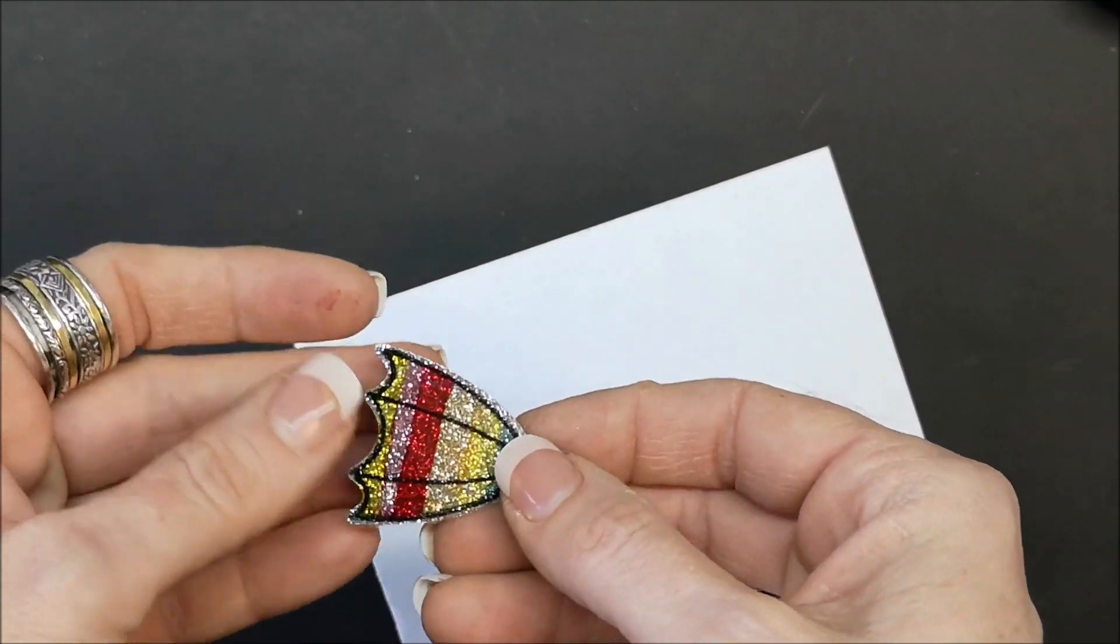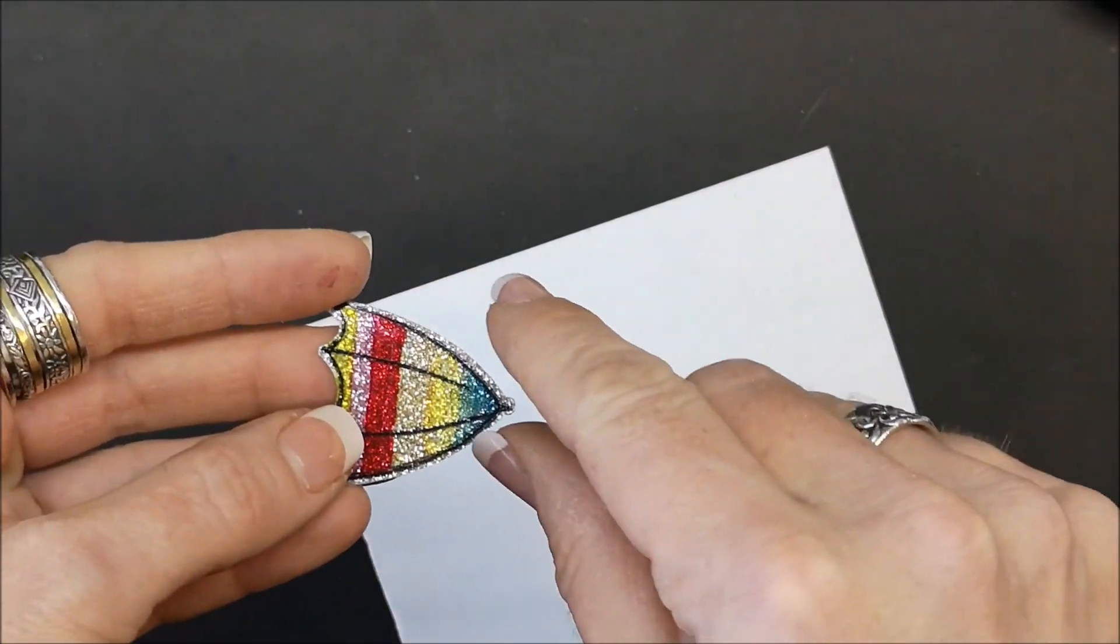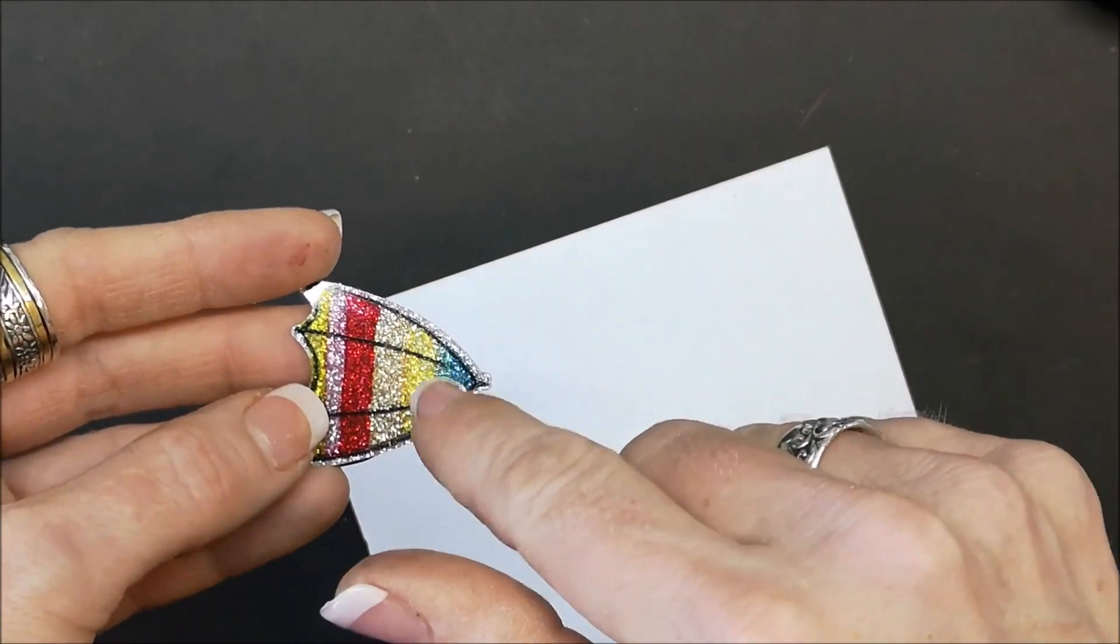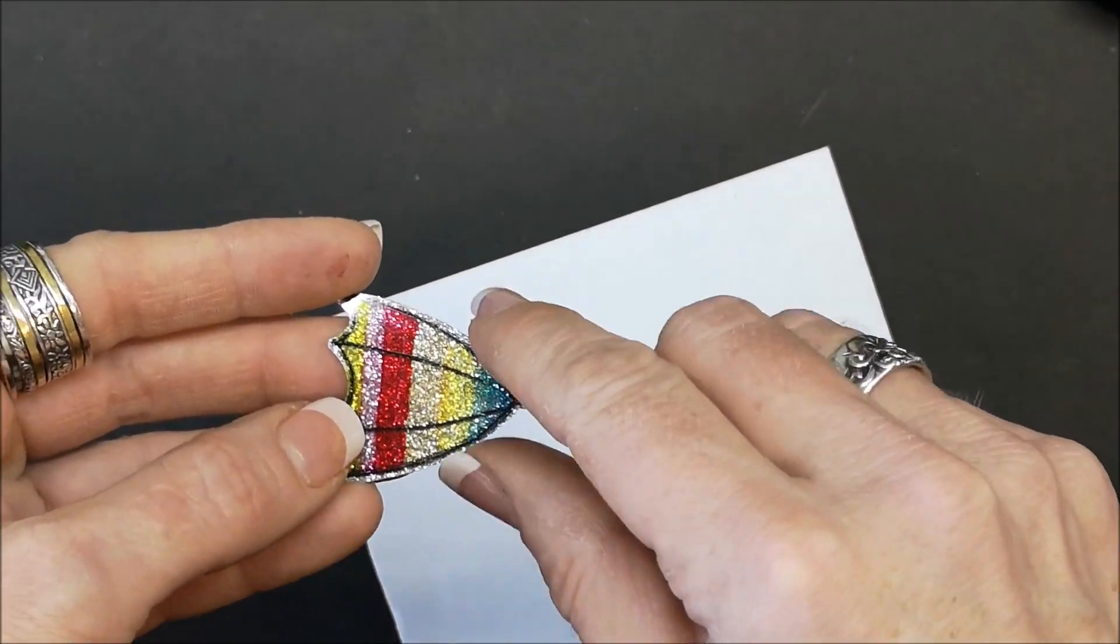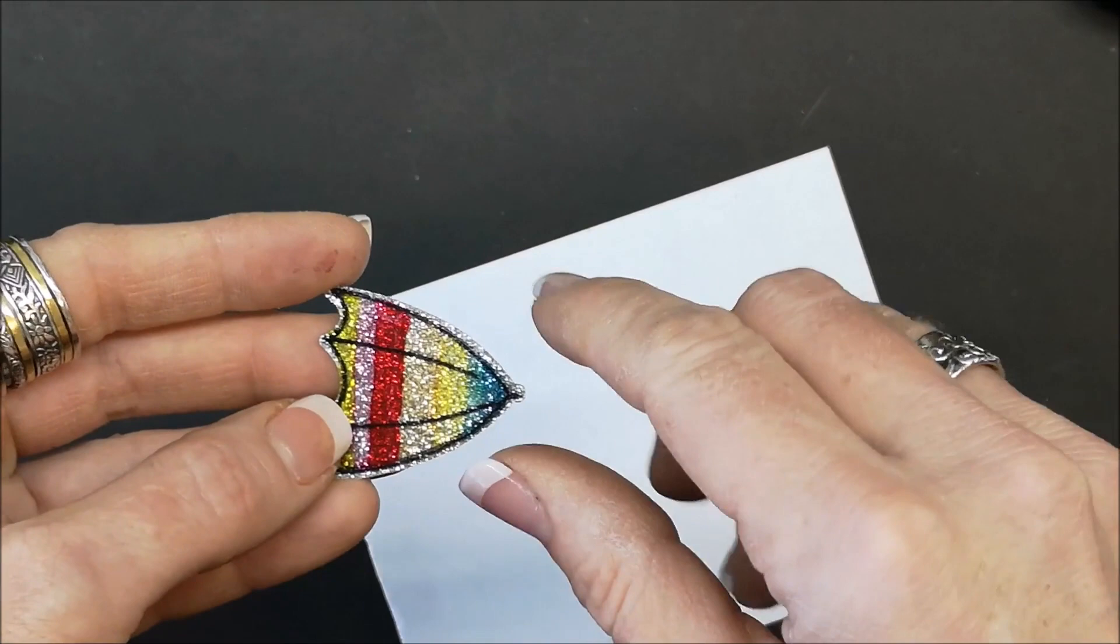They could also be butterfly wings. You could do two of these and make a butterfly and use the center of the umbrella for the body and the little antennas.